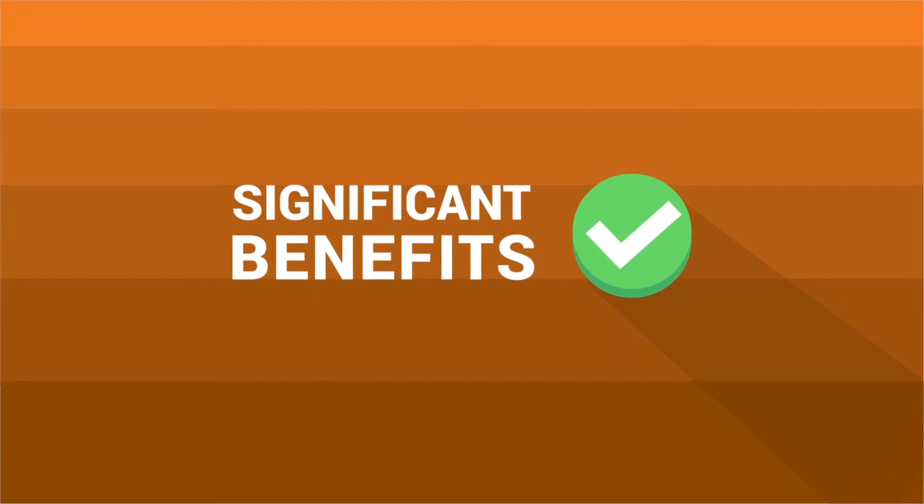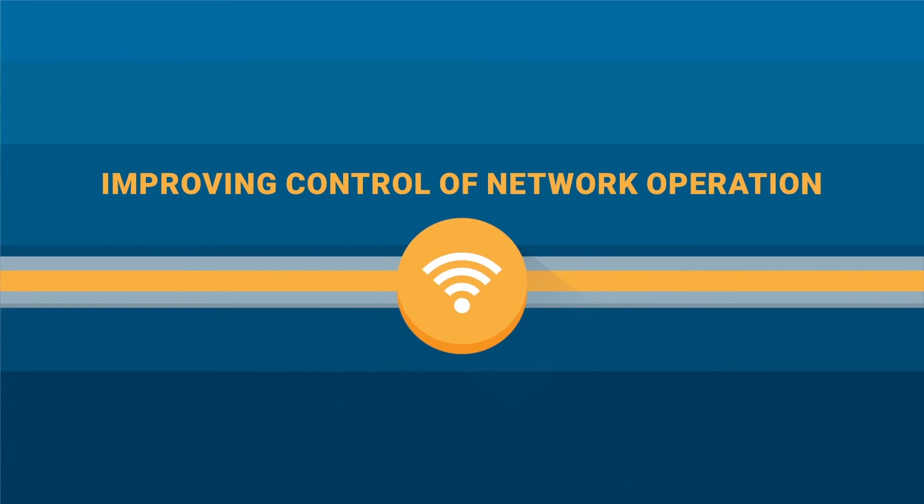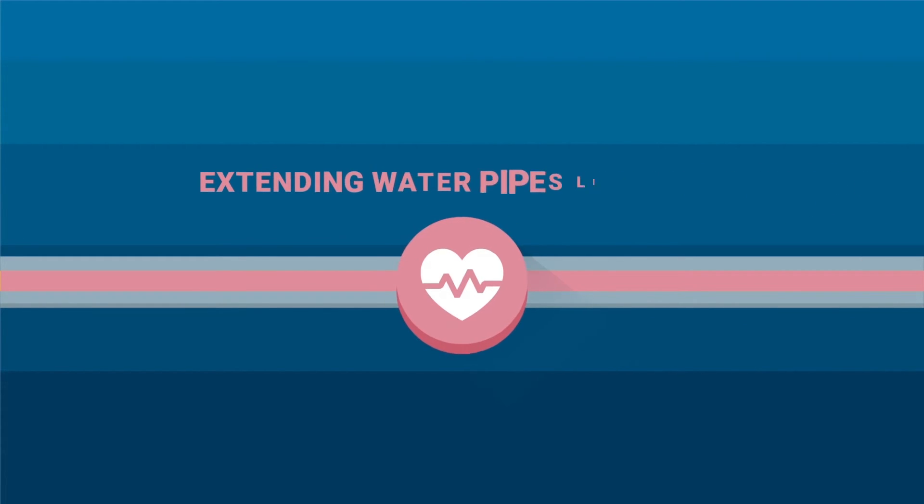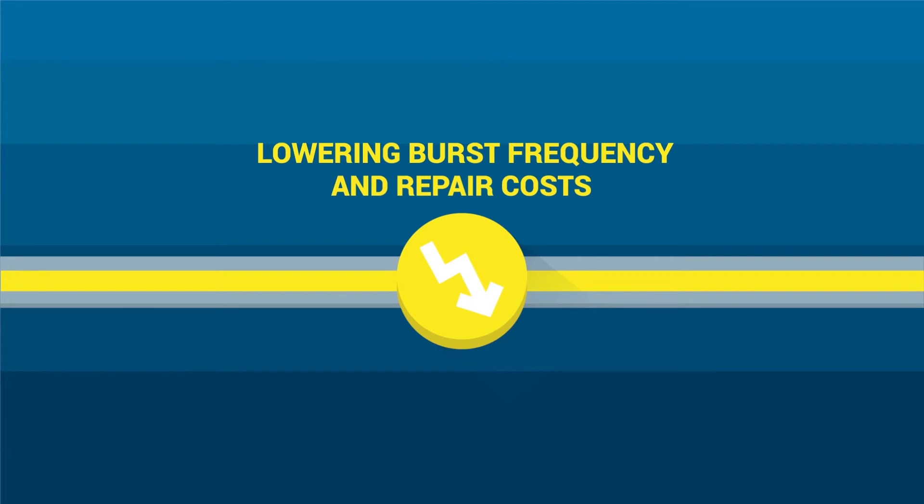Using AquaGuard, utilities gain significant benefits: reducing leaks by up to 50%, optimizing pressure, improving control of network operation, extending water pipes lifetime, lowering burst frequency and repair costs.